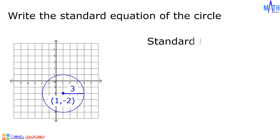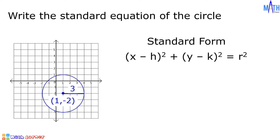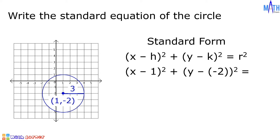The standard form is (x minus h) squared plus (y minus k) squared is equal to r squared. In this example, the center is (1, negative 2), so the value of h is equal to 1 and the value of k is negative 2. So (x minus h) squared becomes (x minus 1) squared, plus (y minus k) squared becomes (y minus negative 2) squared, equals r squared, which becomes 3 squared.